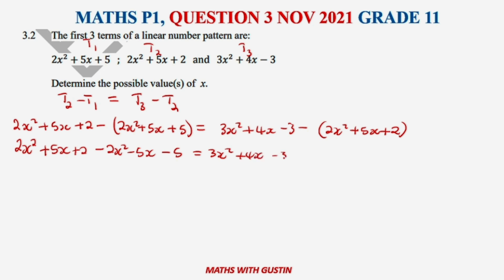Let's simplify. Positive 2x² will cancel with this one, positive 5x and negative 5x cancel. 2 minus 5 is -3, which equals 3x²-2x² giving x², and 4x minus 5x is -x, and -3-2 is -5.